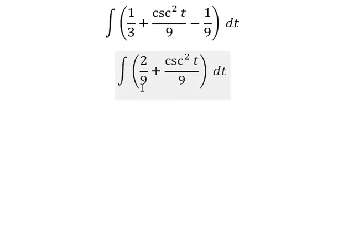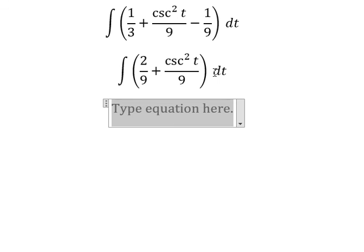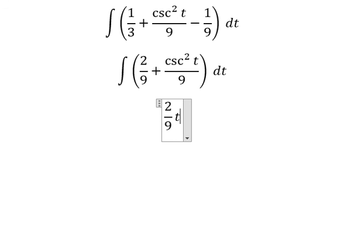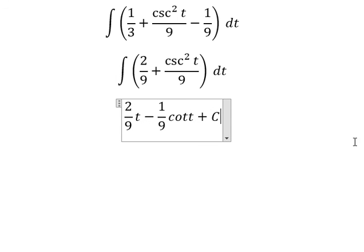And now we get the final answer. The integral of 2 over 9, you got about 2 over 9 t. The integral of this one, you got about negative 1 over 9 cotangent t plus c.